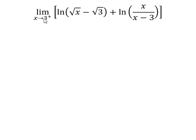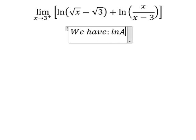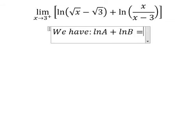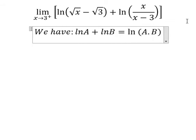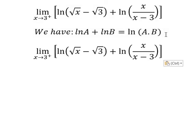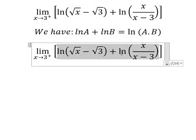So now I will show you how to answer. We have the formula in here. That's about ln A plus ln B equals to ln of A multiplied by B. So we have this one in here.